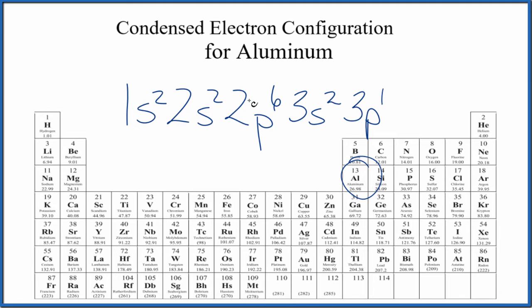And if you count these numbers up, two plus two plus six plus two plus one, you get 13. So this is our full electron configuration for aluminum.